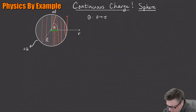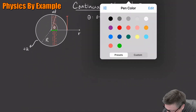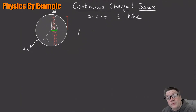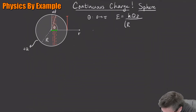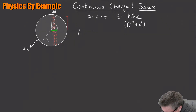The field from one ring we said was kQ·z over (r_prime squared plus z squared) to the three halves, where z is the distance from the ring to the point of interest, and r_prime is the radius of the ring. This is our electric field from a ring of radius r_prime out to some distance z.